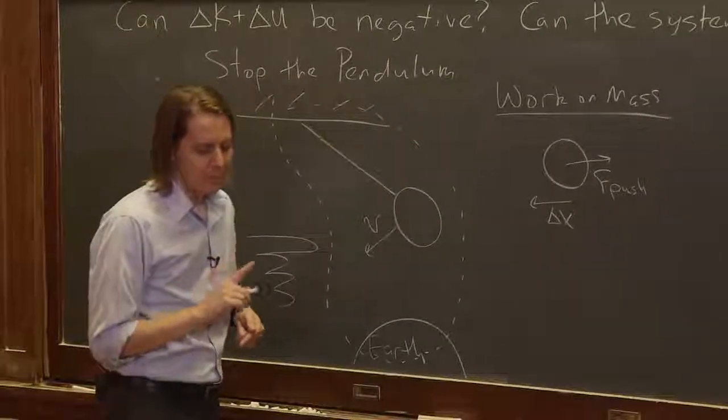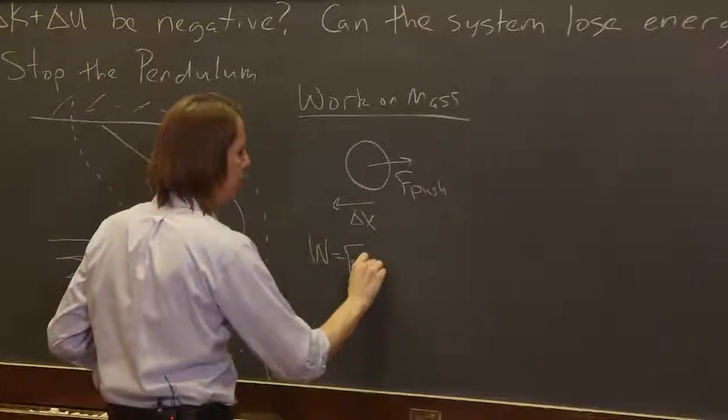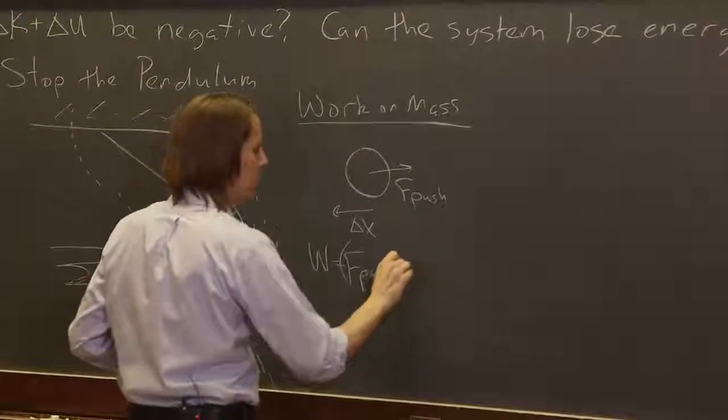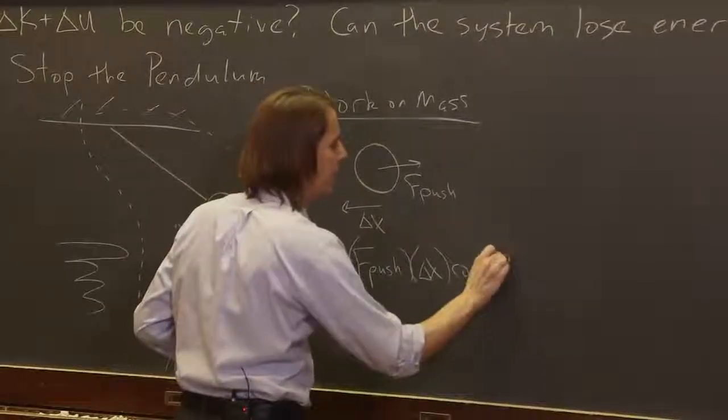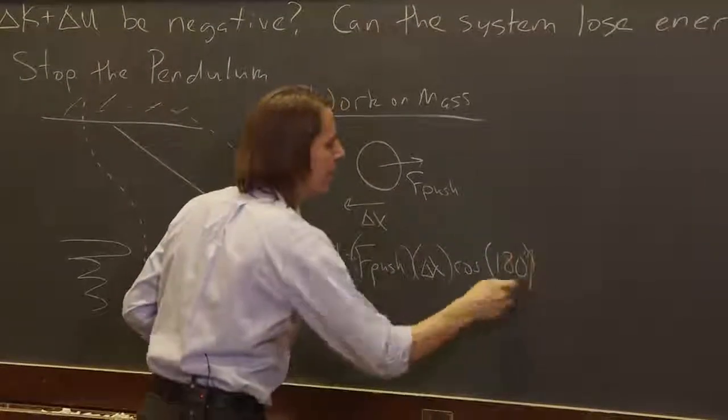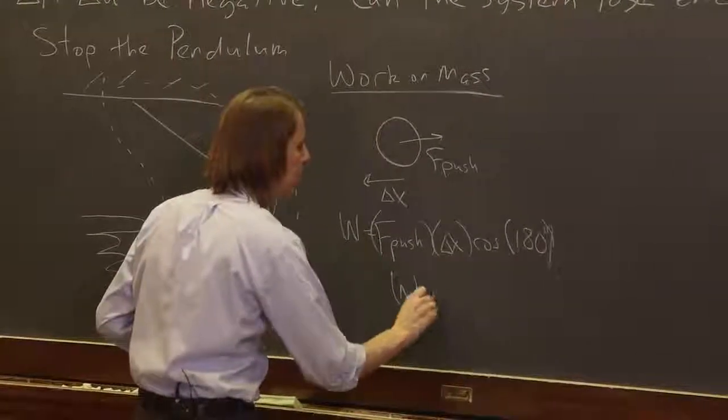And you know what that means, is that the work is going to be F push times delta x times the cosine of 180. 180 degrees. And that means that the work, the external work, is negative.